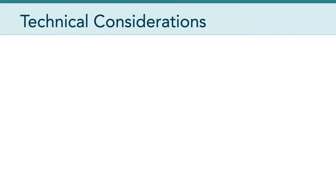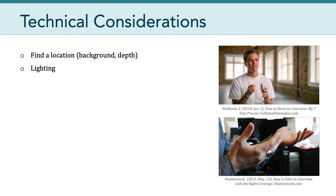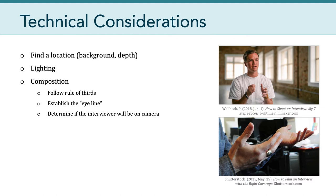Now let's talk about some of the technical considerations. You want to think a lot about location and backgrounds — most of the time you don't want a busy background. Sometimes you'll also want a background that has some depth. If you take a look at the picture in the upper right-hand corner, you can see there's lots of room behind the subject — it's out of focus, but it establishes that the interviewee is in the foreground with some depth to the background. Lighting is super important, as we've emphasized all semester. Follow the rule of thirds and establish the eye line — what direction is the interviewee looking? Connected to that is determining whether the interviewer will be on camera.